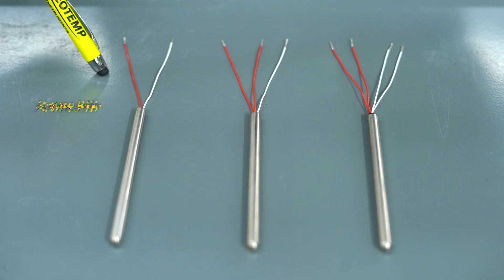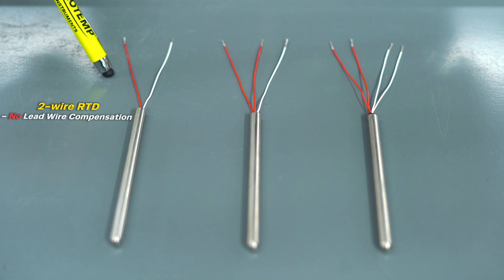Technically you only need two wires to build an RTD, but if the temperature reading is a result of measured resistance across the element, then what about the resistance of the lead wire? In a two wire RTD, this extra lead wire resistance is not accounted for, creating inaccuracy.